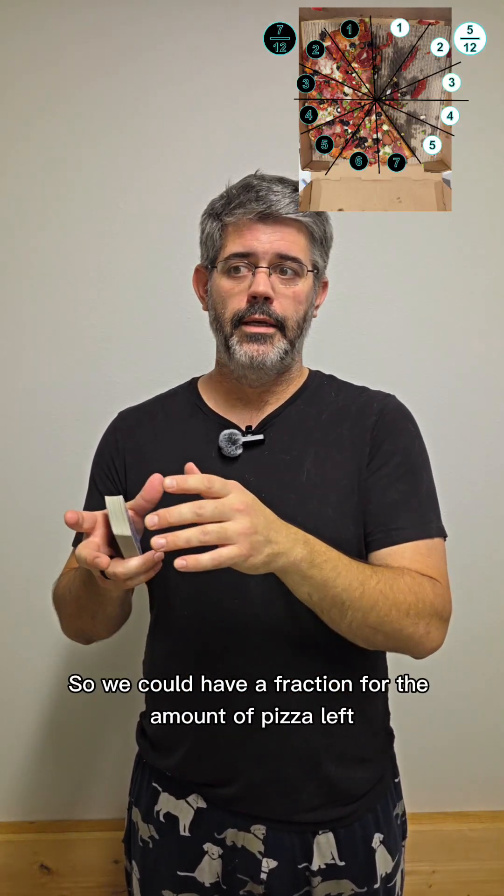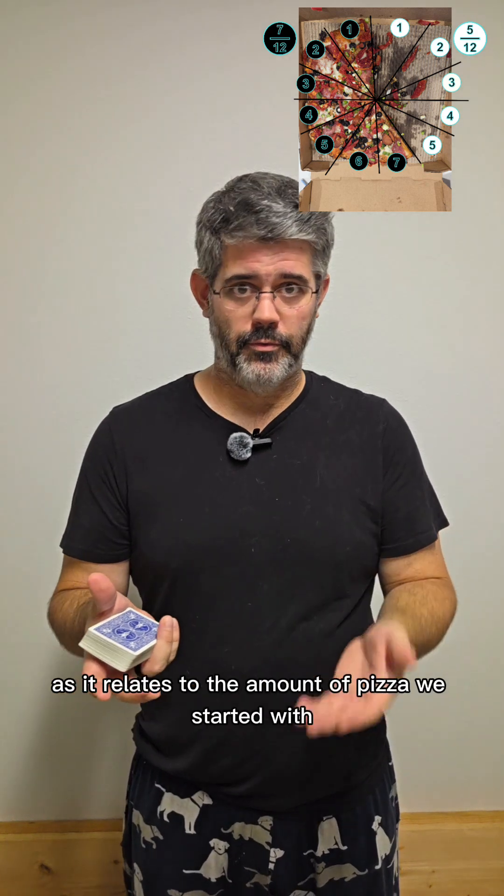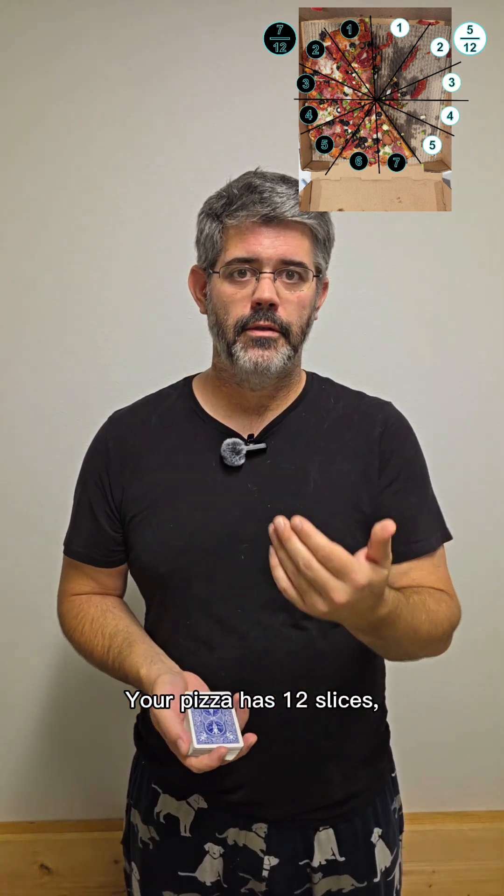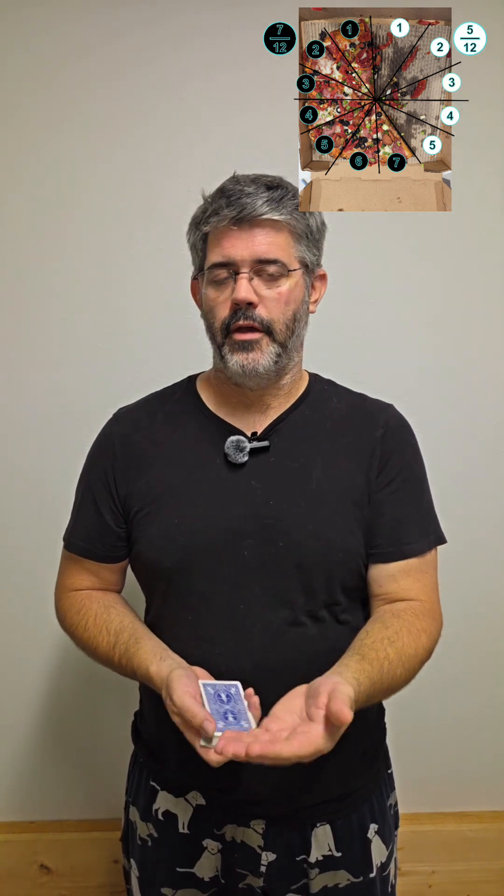So we could have a fraction for the amount of pizza left as it relates to the amount of pizza we started with. Pizza has 12 slices, seven remain, seven twelfths of a pizza.